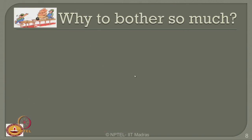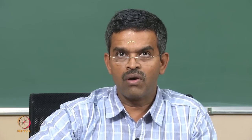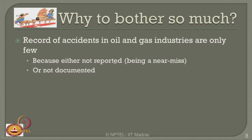One can ask why oil and gas industries bother so much about personnel safety. The record of accidents in oil and gas industries is only few — which is advantageous. But the reasons are either they are not reported because they are near-miss events, or they are not documented. Please understand that oil and gas industries are among those where risk is constantly involved in every production stage. The fact that accident records may be few does not mean accidents do not occur in oil and gas industries, and therefore one cannot say safety should not be a concern.